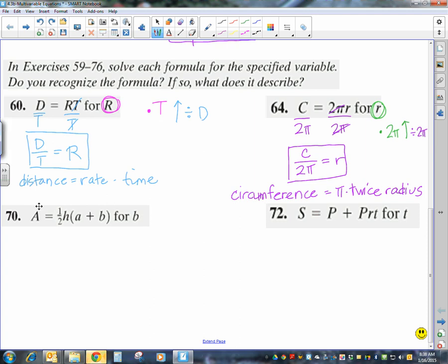Two more. A equals one-half H(A plus B), and we're solving for B. So, this one's a little more complicated. But, again, let's go through these steps. So, if I have B, if I put a number in for B, the first thing I would do to calculate it would be add it to A. So, I would add A. And then, after I add A, I might multiply by H. And then, I would multiply by one-half.